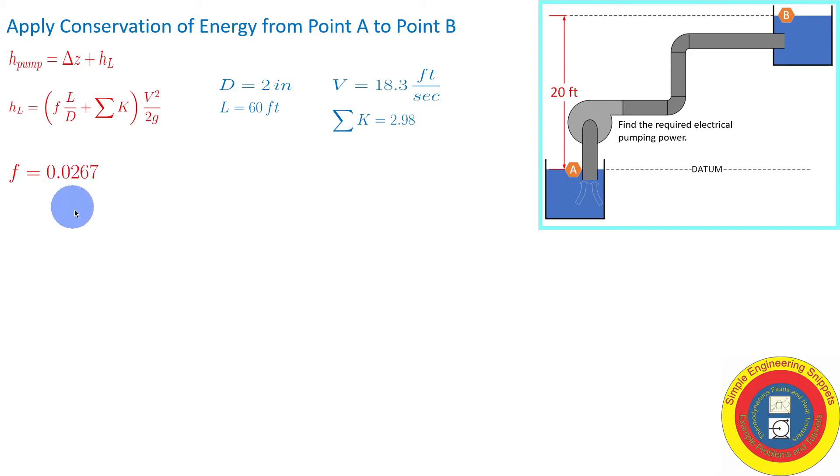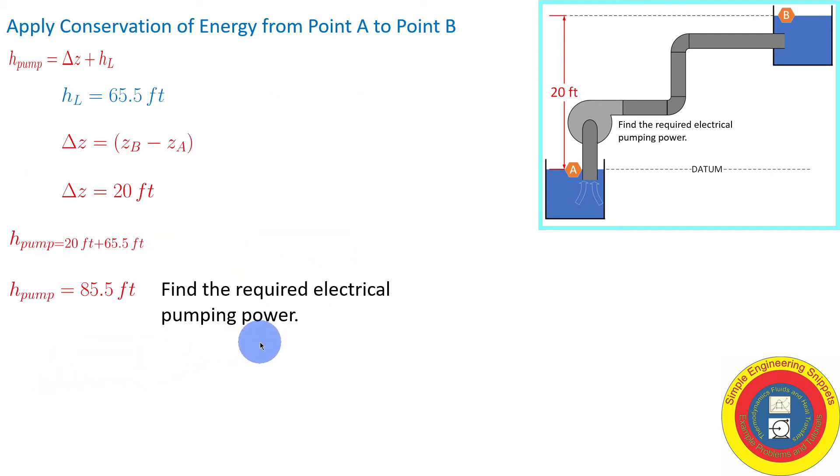So we have the friction factor. Now we can calculate the head loss. It comes out to be 65.5 feet. Now that we know the head loss, we already knew the change in elevation. It's a simple matter to calculate the pump head. It's 85.5 feet.